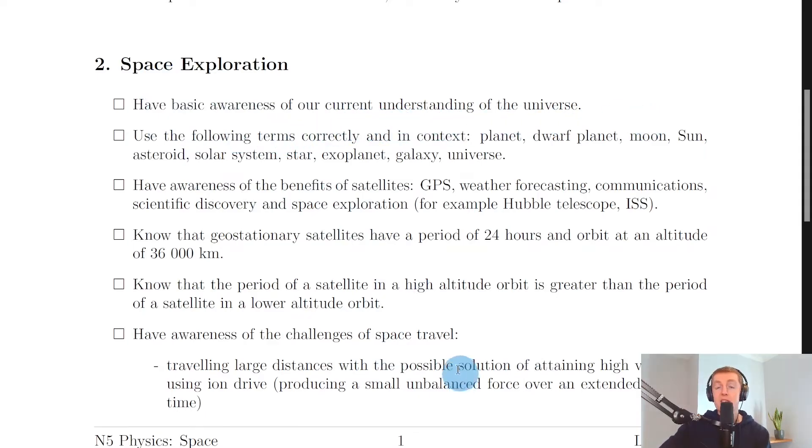Moving on to the second key area, space exploration, you need to have basic awareness of our current understanding of the universe. This includes using the following terms correctly and in context: planet, dwarf planet, moon, sun, asteroid, solar system, star, exoplanet, galaxy, and universe. Some popular definitions to point out here would be things like a dwarf planet—remember, a dwarf planet is like a planet but it's not able to clear its orbital path of debris. We also have a moon here, which remember is a natural satellite of a planet.